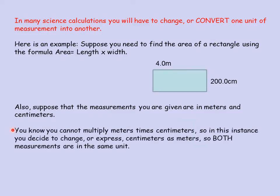You cannot multiply meters times centimeters. So in this instance, you decide to change or express centimeters as meters so that both measurements are in the same unit. You either have to change the meters to centimeters or the centimeters to meters — they both have to be in the same unit.